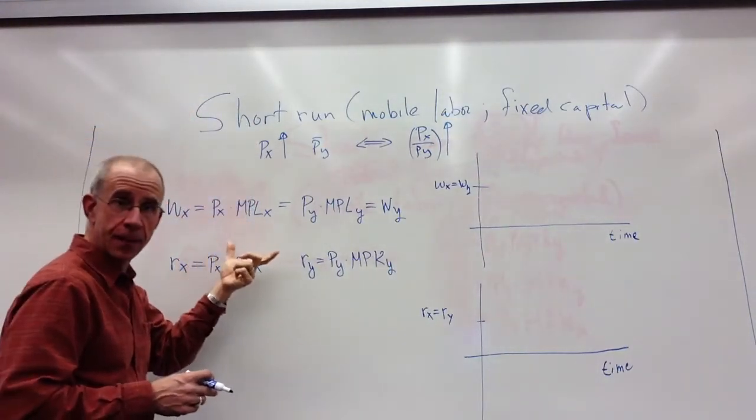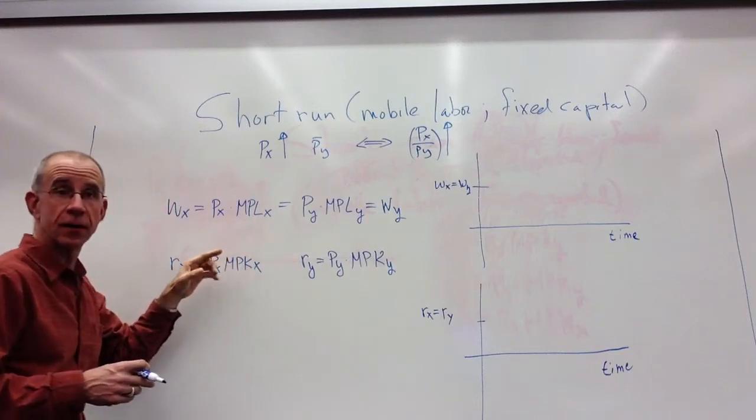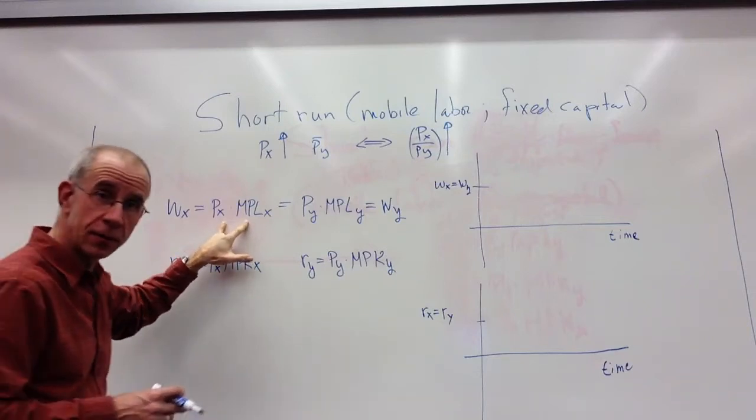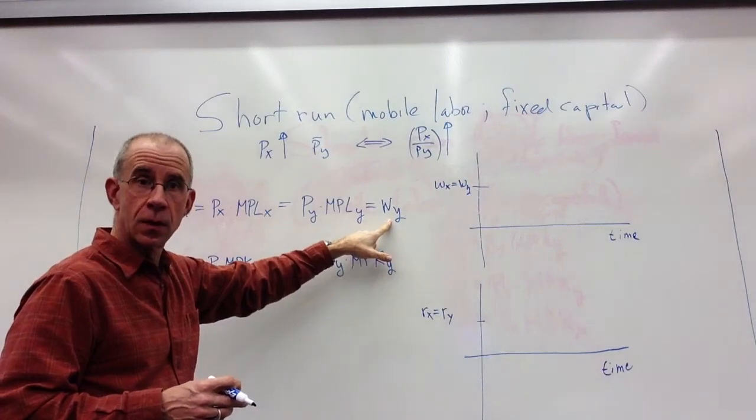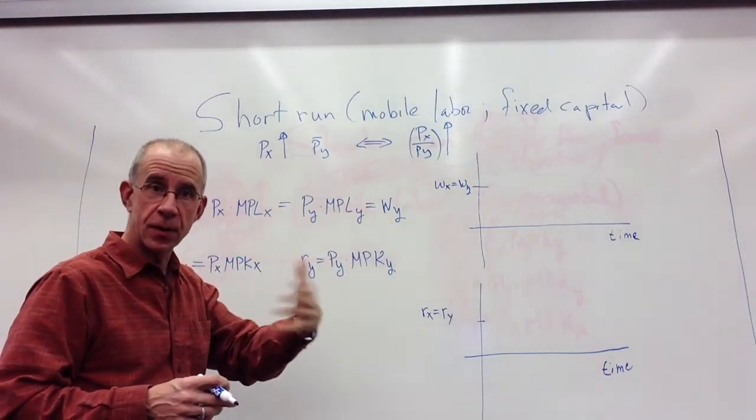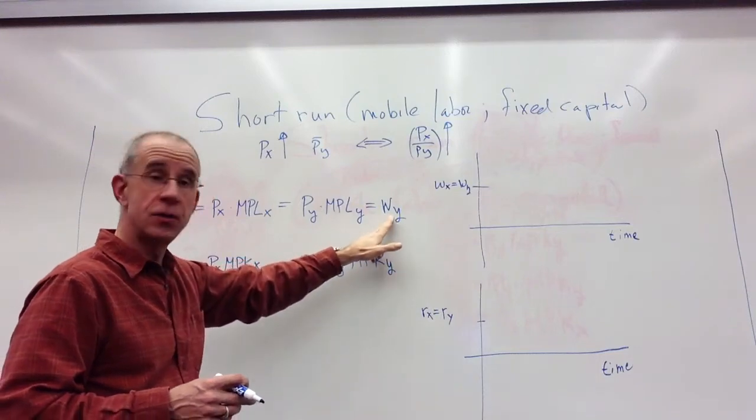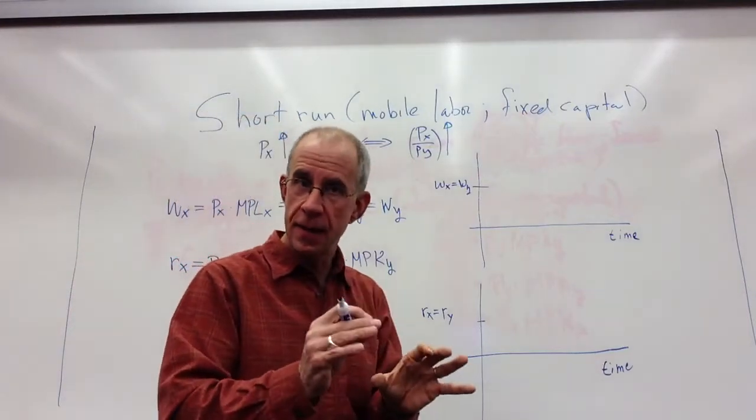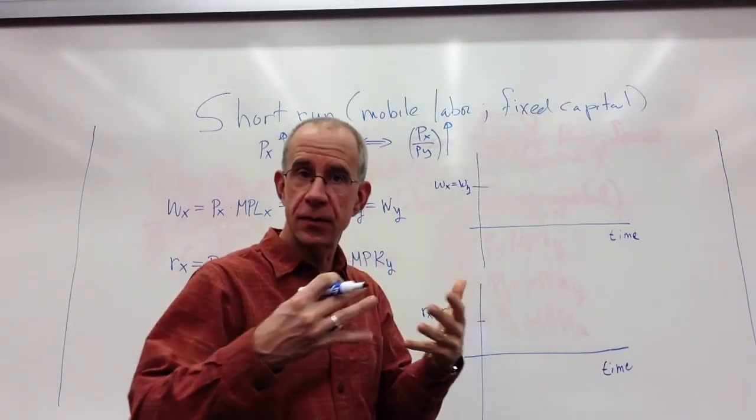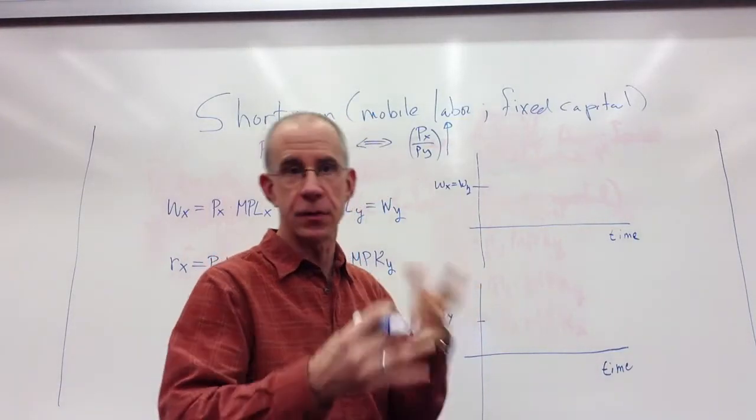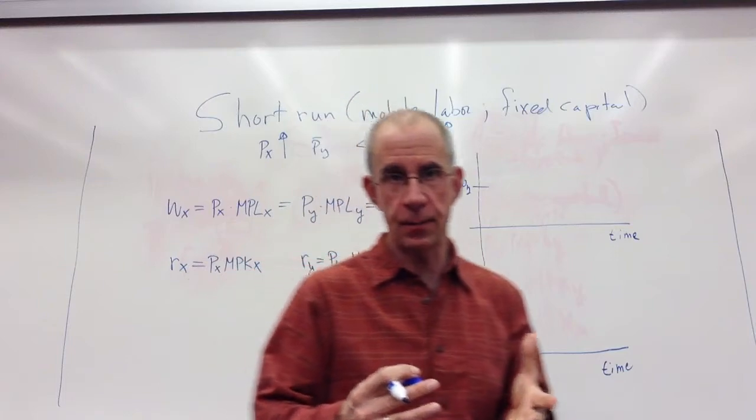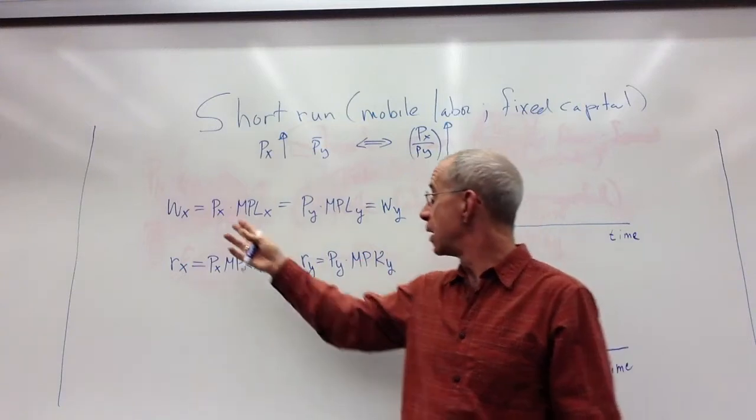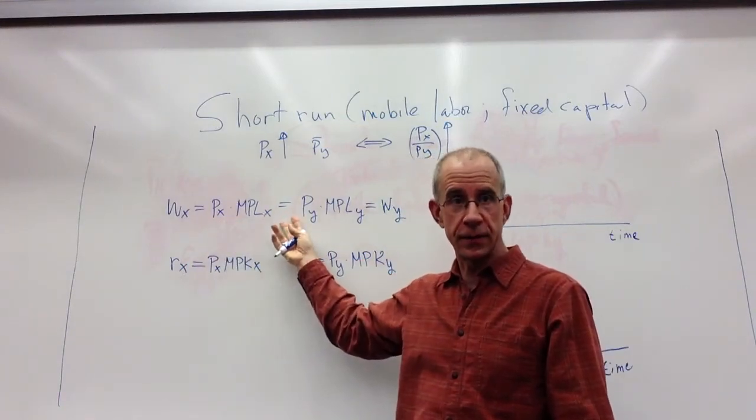We have this relationship about the payments to the two factors. Labor in X is paid the value of its marginal product, price times the marginal productivity of labor, similarly for the wage in Y. If we assume that labor can move back and forth between the industries, the wage in Y and the wage in X are going to be equal. They can change both with the price change and also marginal productivity changes.